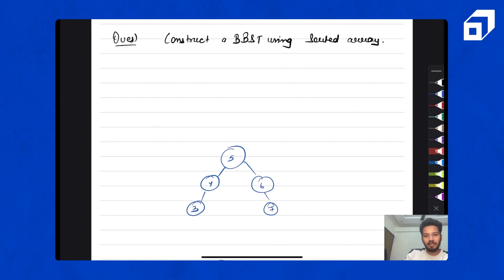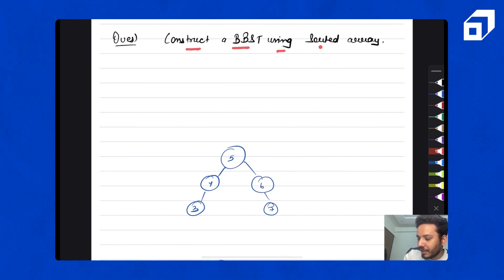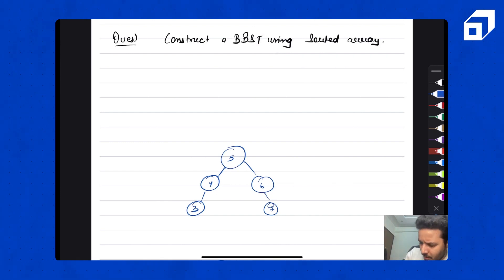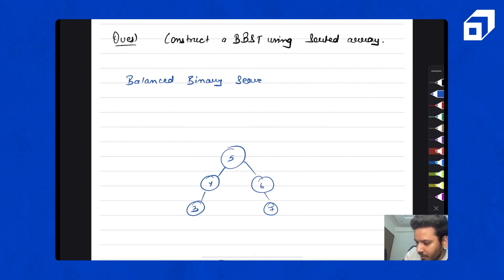Hello everyone, today I am back with another beautiful question on binary search tree. The question is: construct a BBST using a sorted array. First of all, what is a BBST? It stands for balanced binary search tree.